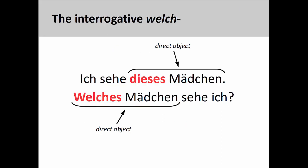Finally, although we can use der-words almost anywhere in a sentence, since welch- is an interrogative, it must always come in the first position. For a speaker of English, this may sound a bit unusual. In the first sentence, the typical order between subject, verb, and direct object is maintained. In the second sentence, however, the direct object comes in the first position on account of using welch-. You may want to review the presentations on German syntax and interrogatives to refresh this concept.